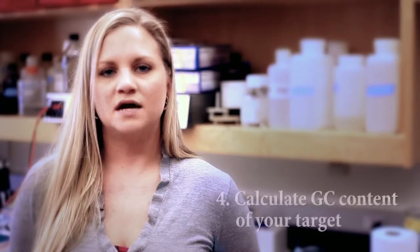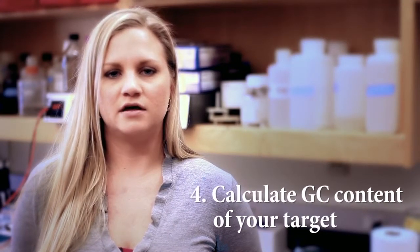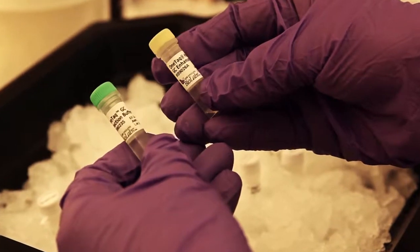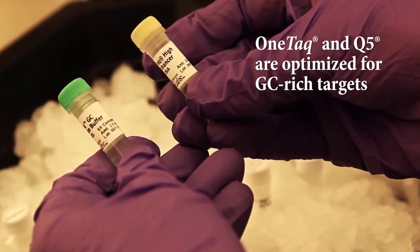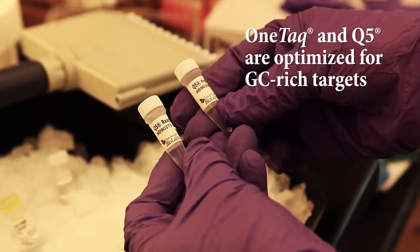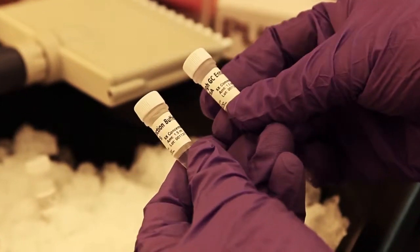Fourth, when possible, calculate the GC content of your target. For GC-rich amplicons, use a polymerase specifically designed for GC-rich PCR like OneTaq or Q5 DNA polymerases. If high GC additives are included with the polymerase, please follow our usage recommendations for the best results.